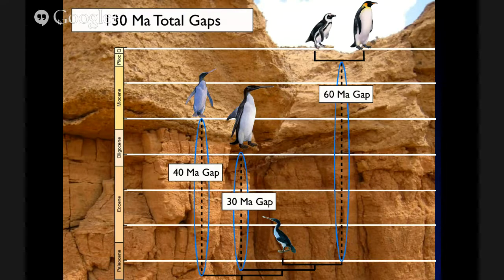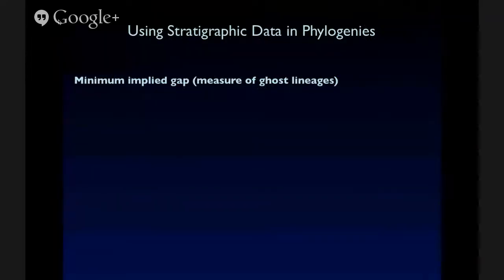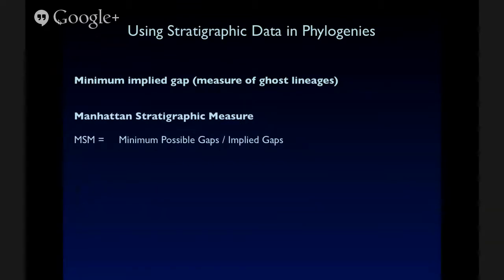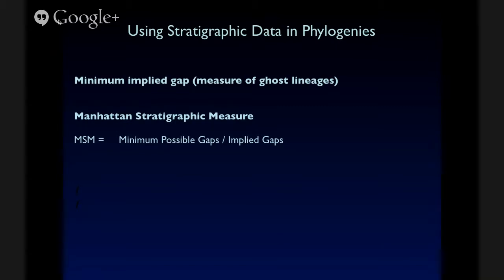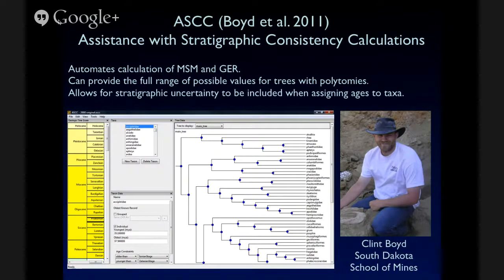And besides just totaling up raw gaps, there are many other indices that have been proposed. So what I was showing you there is the measure of ghost lineages, the smallest gaps implied by the phylogeny. We can also look at things like the Manhattan stratigraphic measure, which is calculated as the minimum possible number of gaps by comparing to the best fit phylogeny, divided by the implied number of gaps of the phylogeny we're testing. Or the gap excess ratio, which is calculated as the maximum possible number of gaps. If we had the tree that fit the stratigraphic record the worst minus the implied gaps divided by the maximum number of gaps minus the minimum number of gaps. And MSM scales to one, GER can become negative if there is a poor enough fit or a large enough number or length of gaps.